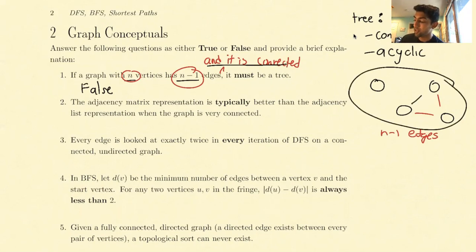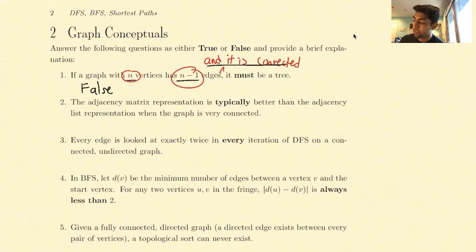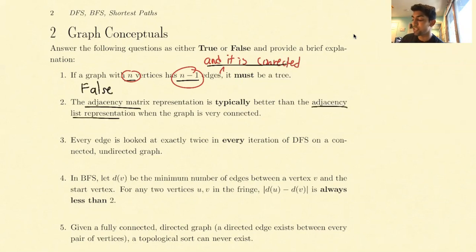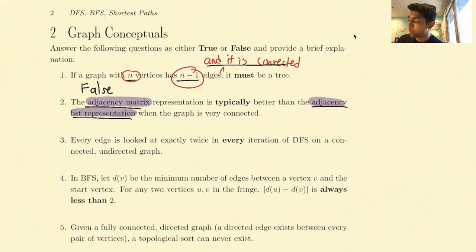The next question states: the adjacency matrix representation is typically better than the adjacency list representation when the graph is very connected. To answer this, we should first know what these two representations are, so let's quickly describe them using a quick graph.